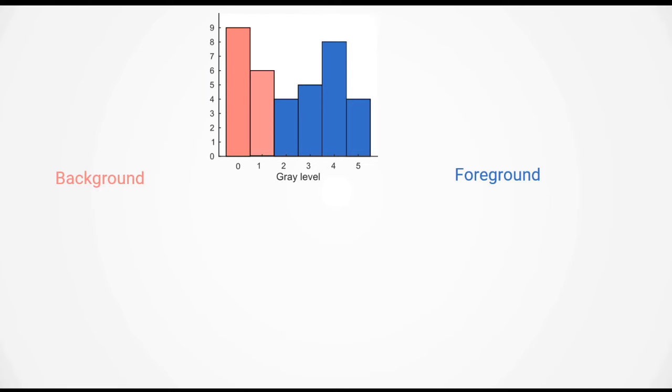We can now compute the weights w_b and w_f. For the background, the weight w_b is given by 9 plus 6 which is the height of the bars in red, divided by 36 which is the number of pixels in the image, giving us 0.42. For the foreground w_f equals 4 plus 5 plus 8 plus 4 divided by 36, which gives us 0.58.